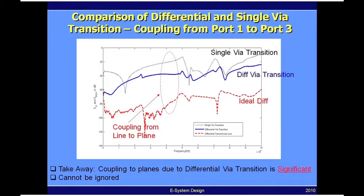The red curve is the case when you have differential lines without any via transitions - the ideal differential lines. Since they are routed right next to each other with no via transition, there is hardly any loss of energy from the microstrip line into the power and ground planes.